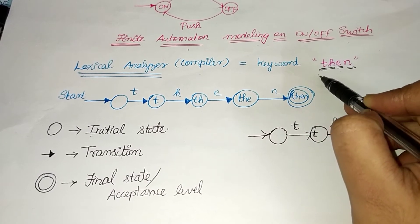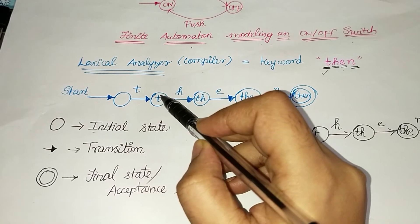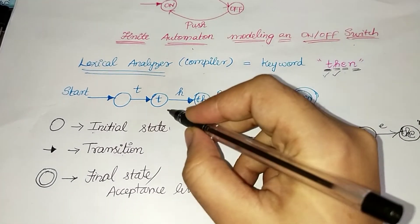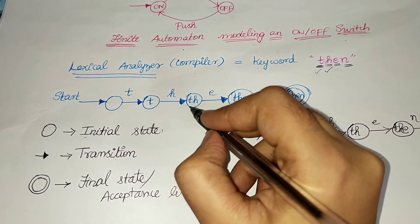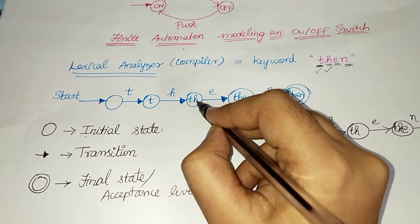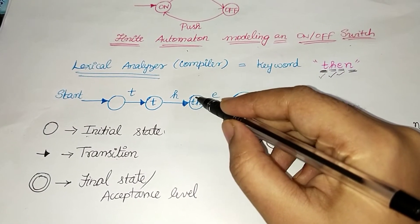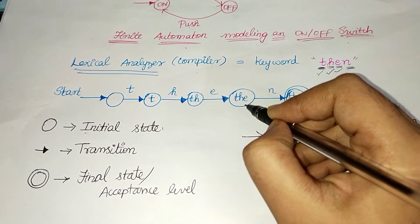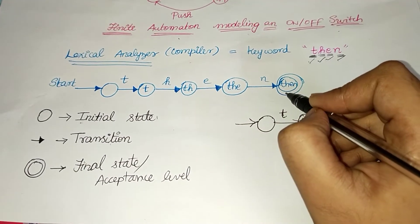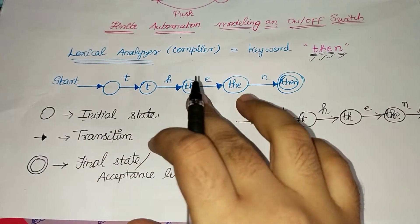Let's do the first word — THEN. The first letter is T. In the T transition, the other state will store T. The second letter is H — the next state is TH. The next letter is E, and in the next transition the state is THE. The last letter is N — N is the final transition, and the final output is THEN. This is how the Lexical Analyzer works.